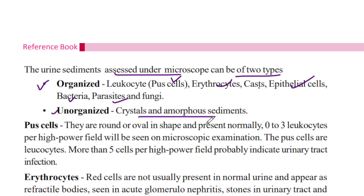Organized sediments include erythrocytes, epithelial cells, bacteria, parasites, and fungi. Unorganized sediments include amorphous sediments and crystals.